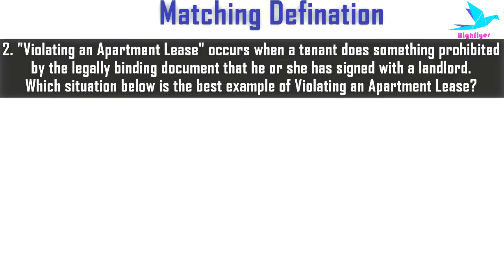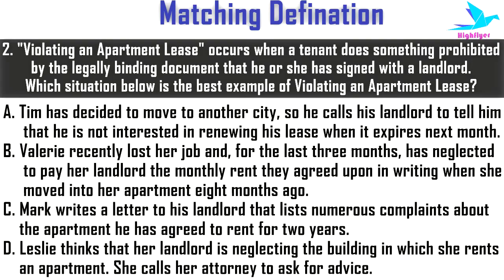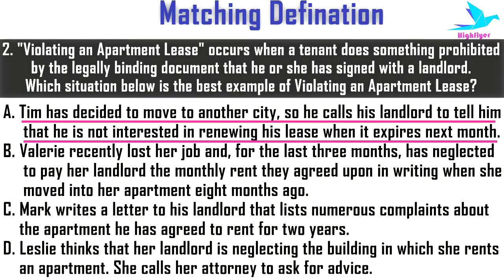Next example: Violating an apartment lease occurs when a tenant does something prohibited by the legally binding document that he or she has signed with a landlord. Which situation below is the best example of violating an apartment lease? Option one: Tim has decided to move to another city, so he calls his landlord to tell him that he is not interested in renewing his lease when it expires next month.